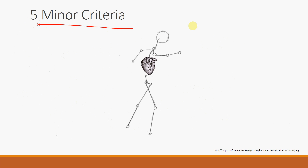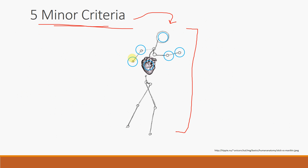Now for the five minor criteria, which are tough to remember because they're nonspecific. A stick figure mnemonic helps here. Each body part on the figure corresponds to one of the minor criteria: the hands, the elbows, the heart area, and the head — each enclosed by a circle — each represent a separate minor criterion.